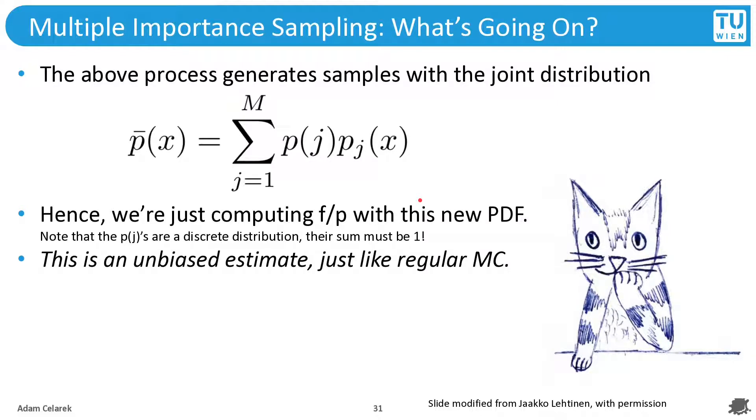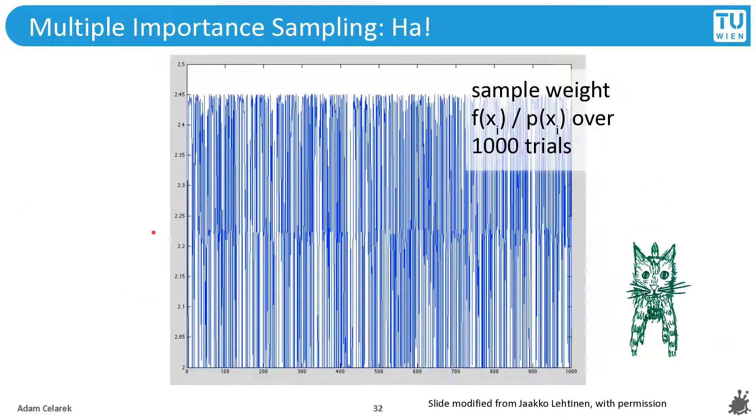And another way to look at this is that we are generating samples with the joint distribution of this. Hence, we are just computing f over the joint probability with this new pdf. This is just another way to look at the same thing. And this produces an unbiased estimate just like regular Monte Carlo.